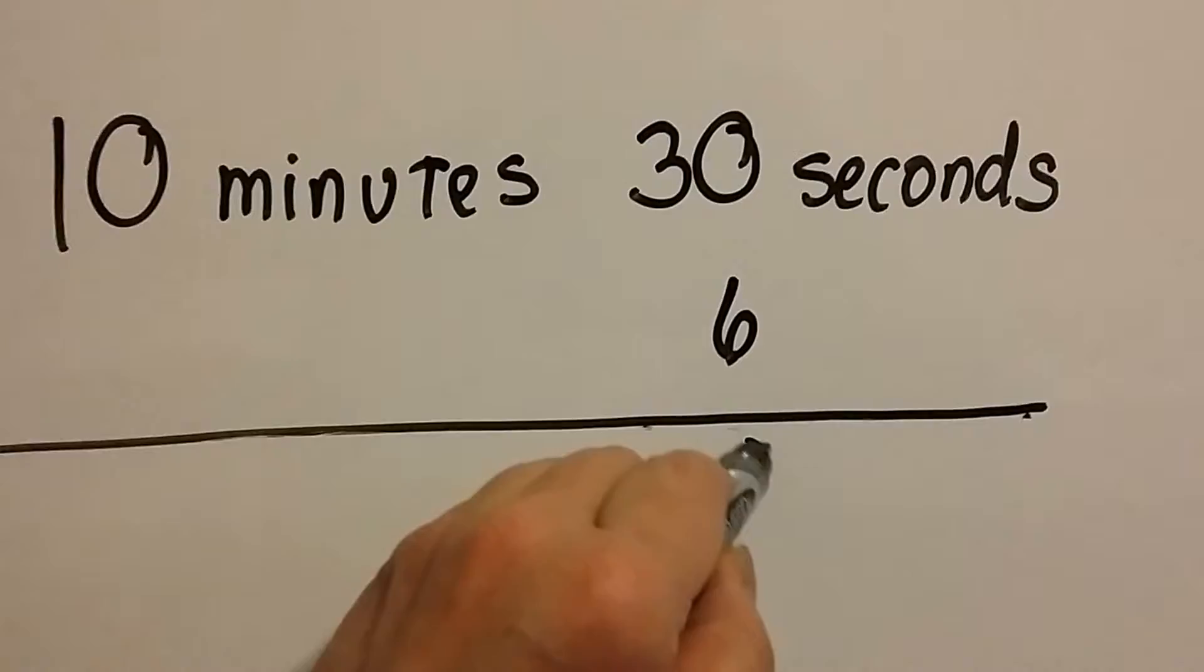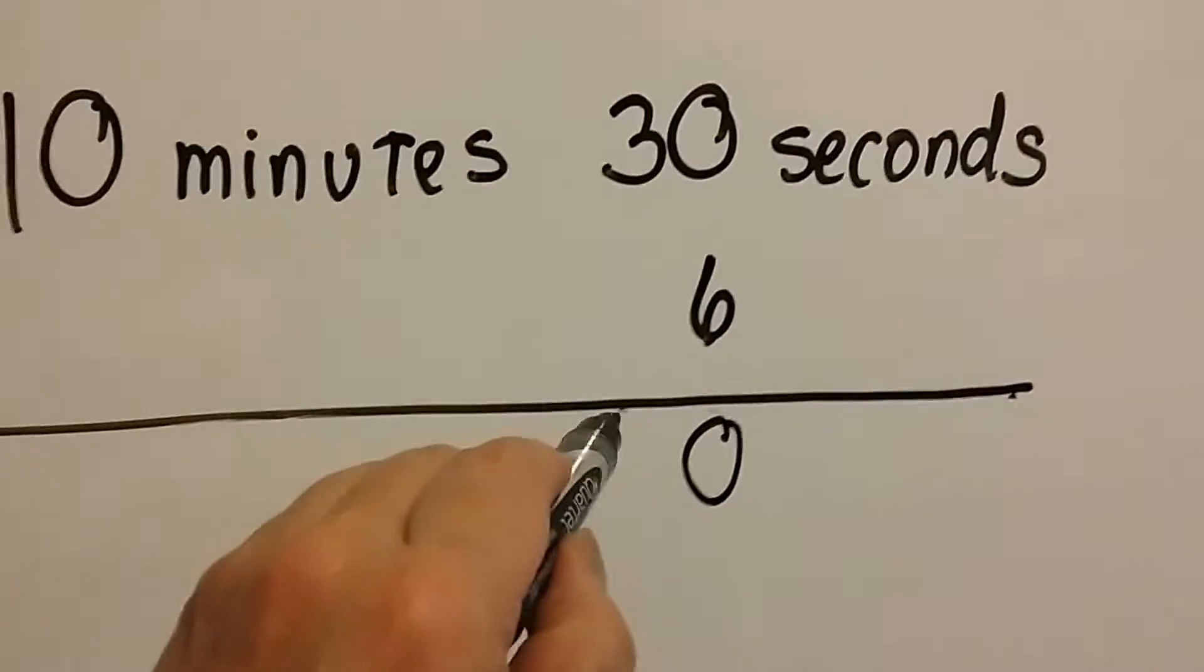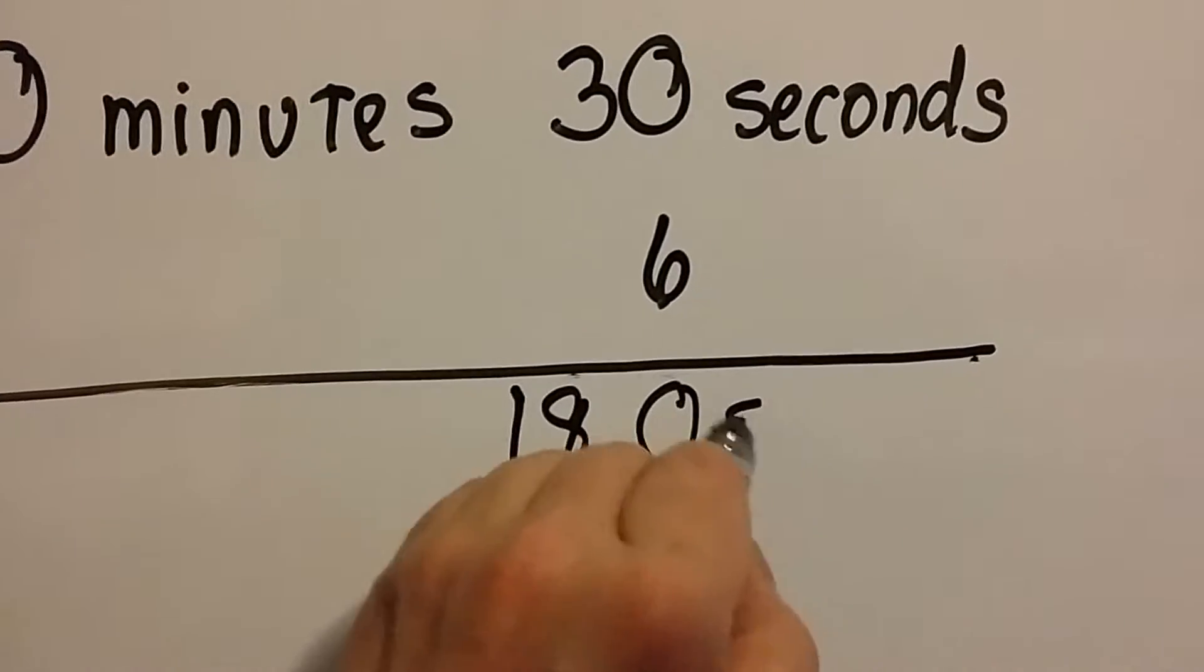We're going to do 6 times 0, which is 0, and 6 times 3, which is 18. That's 180 seconds.